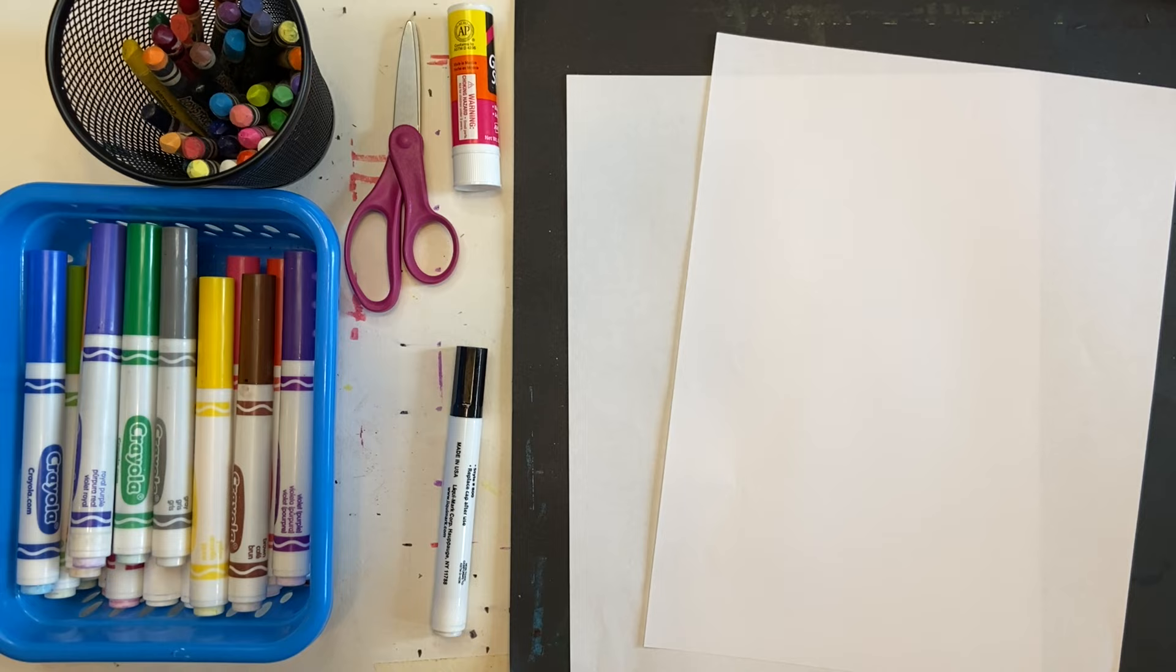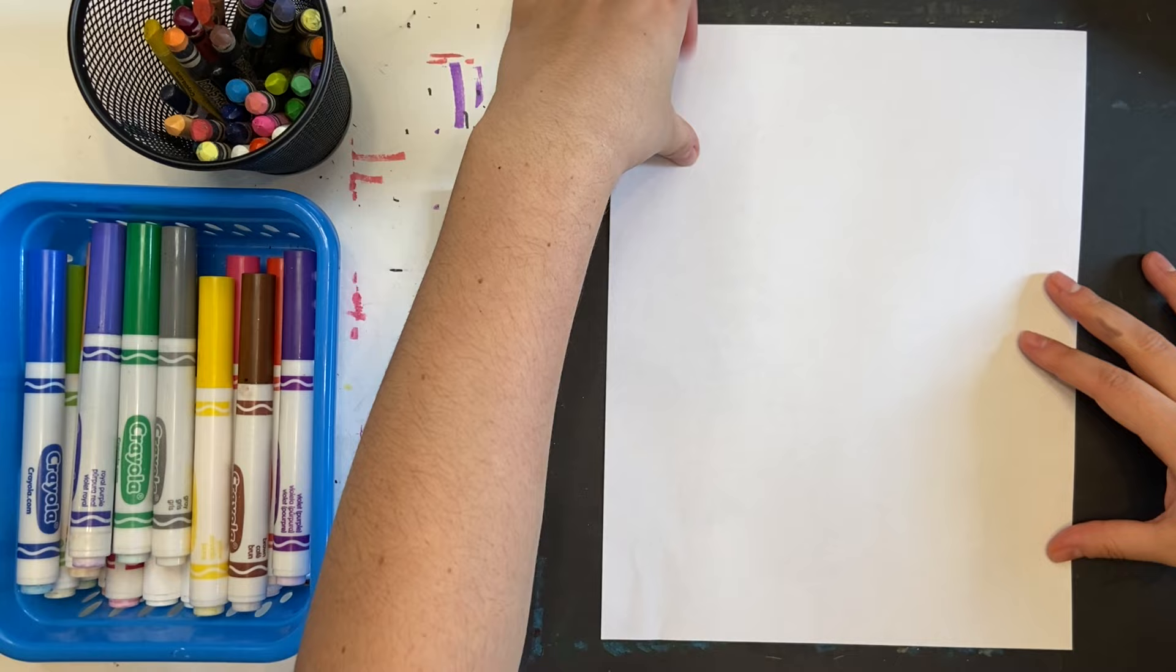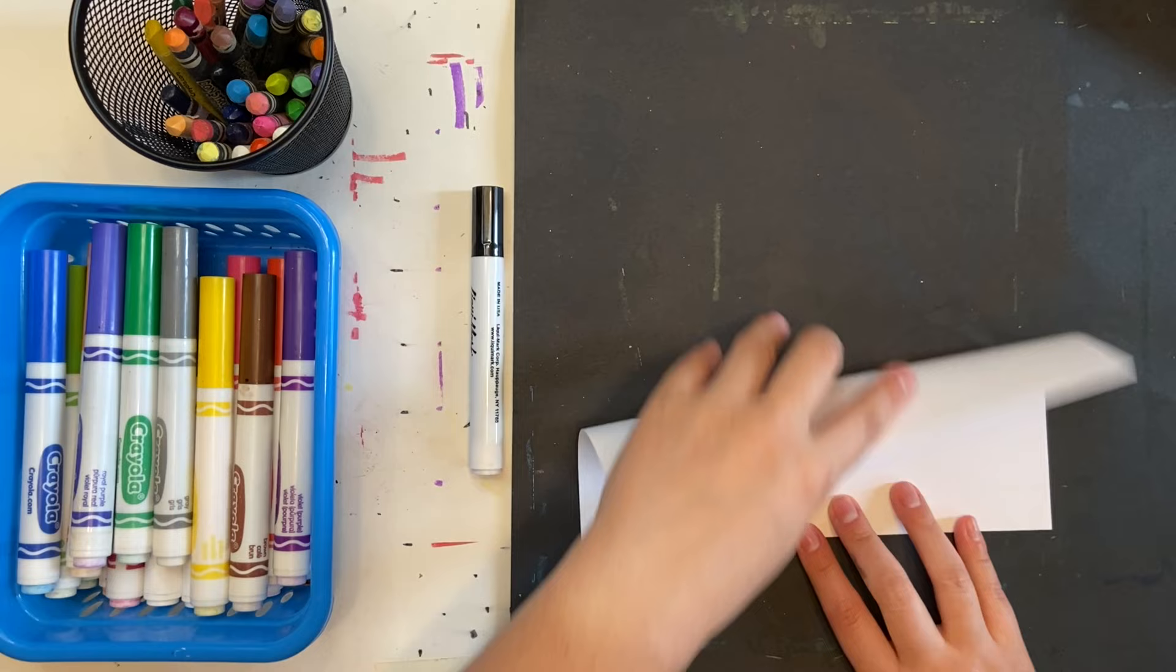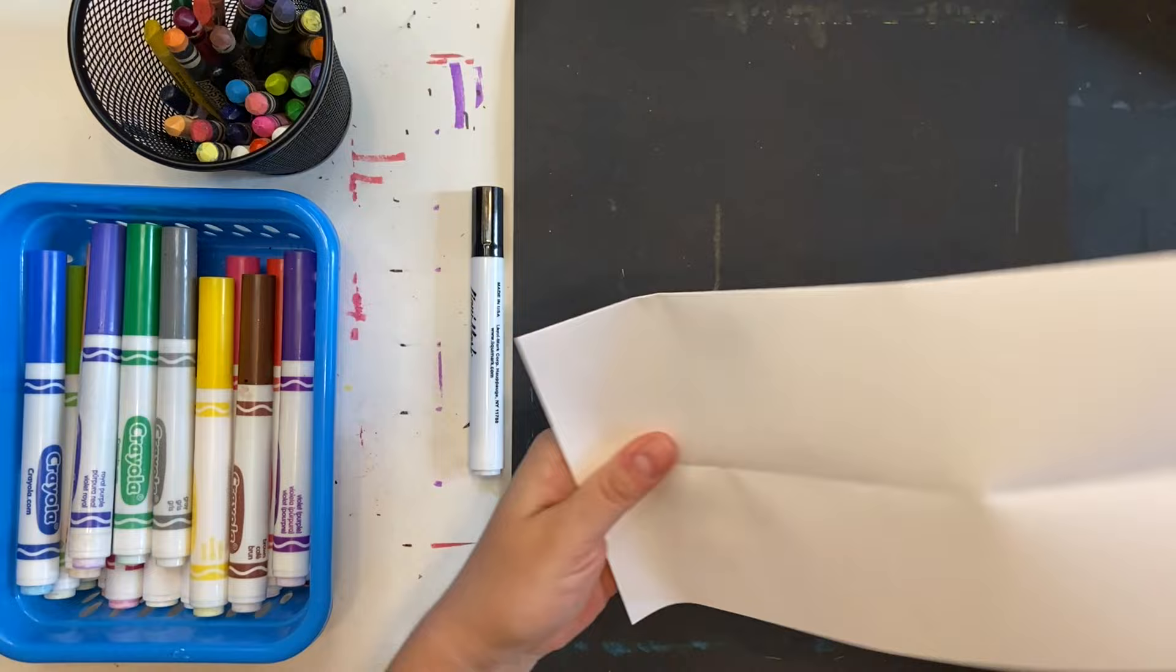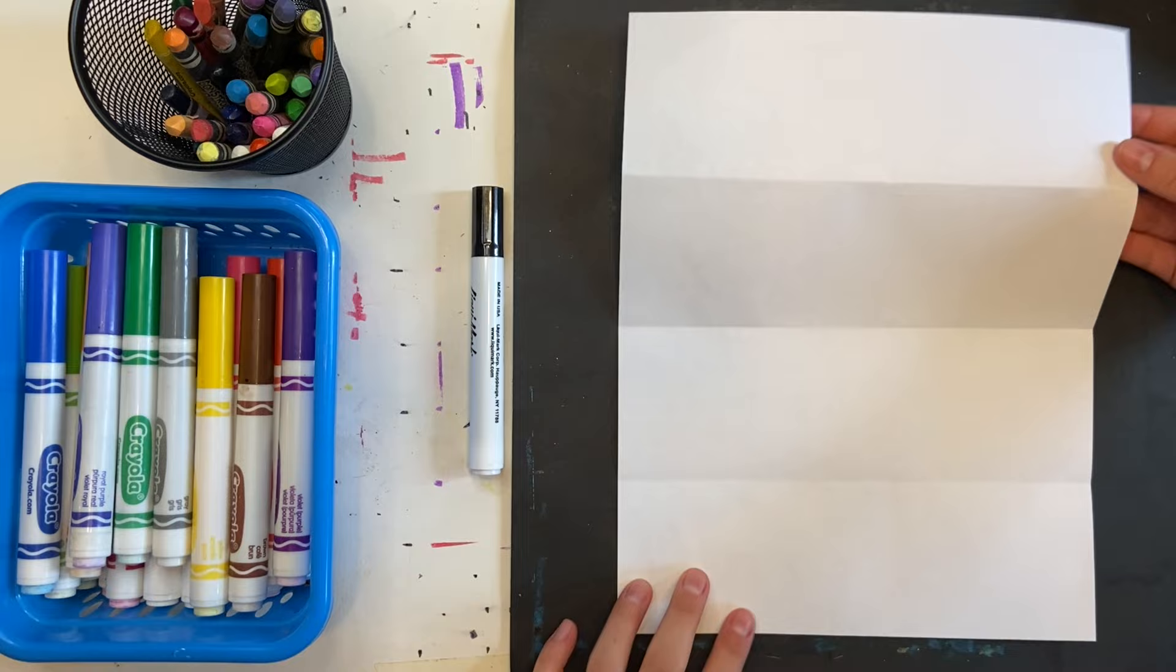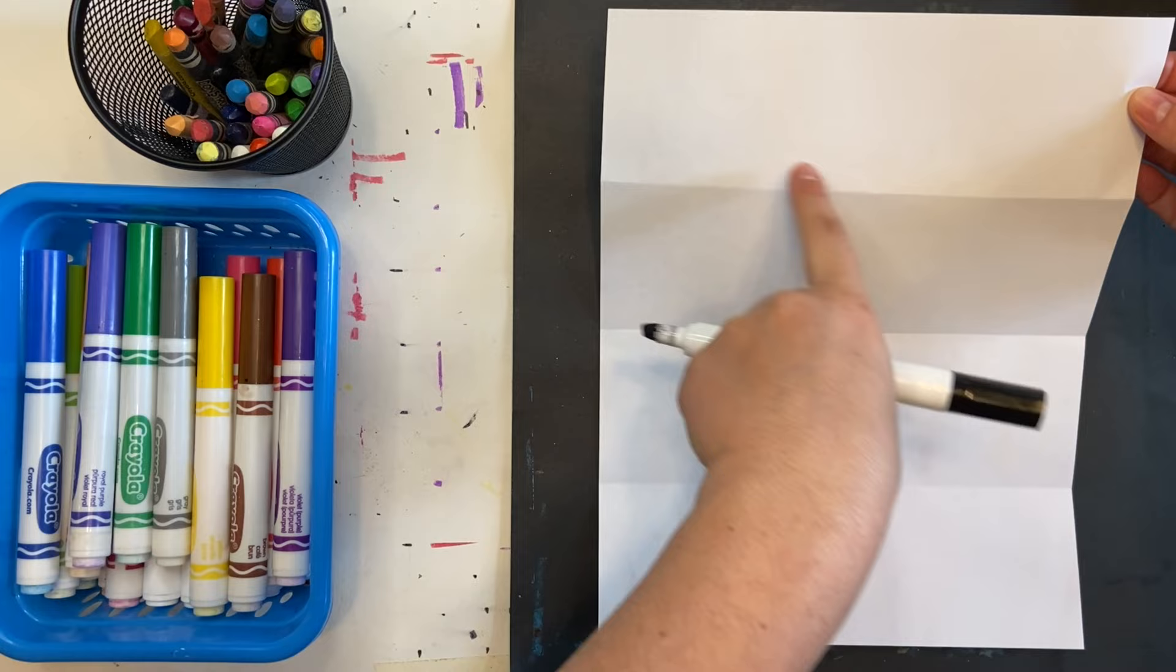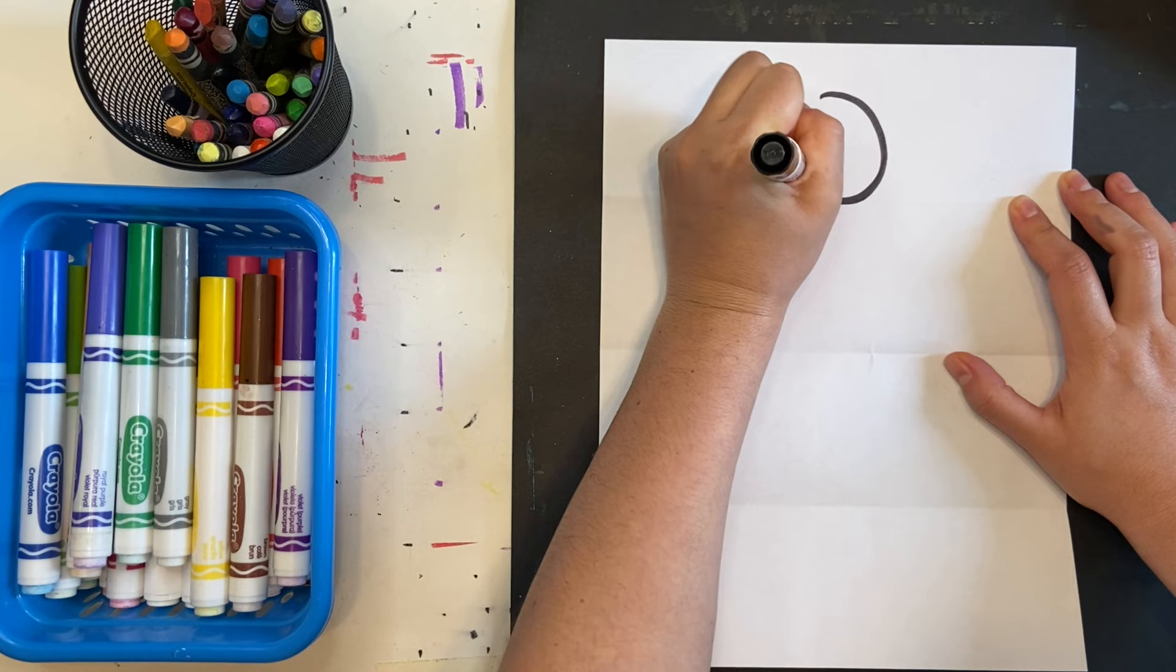Starting with my first piece of paper, I'm going to fold it down twice, once and then again, and this will divide my paper up and help me draw my person in proportion, which means everything is the right size. See how I have my folds as my guides? Using my black marker, I'm going to draw a circle, a big circle, in that top section of my paper.